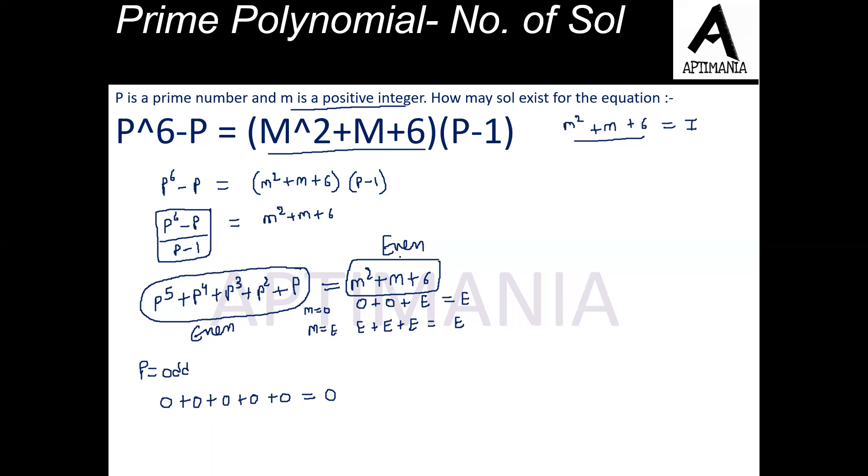But the answer must be even. So from here we can say that P is not an odd number. P has to be an even number only. And P is a prime number and it is even also. So only one case exists for this. We have P equal to 2.